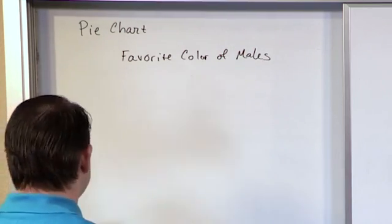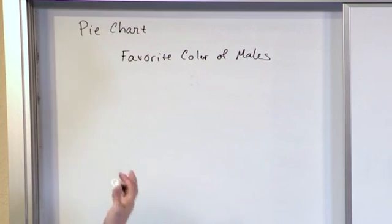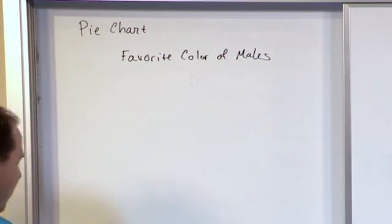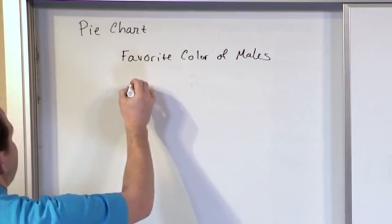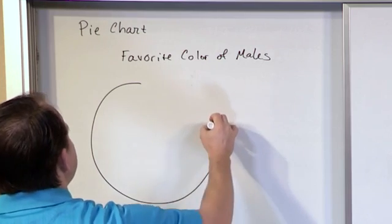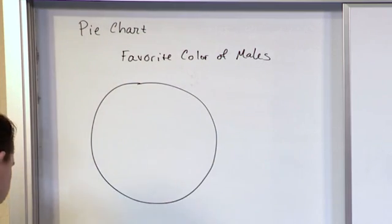some people are going to answer red, whatever. And we get all that data. And this is just a way to represent that. So what we have is we have a pie chart or a pie graph. So what we do is we draw a circle because pies are circles, right?